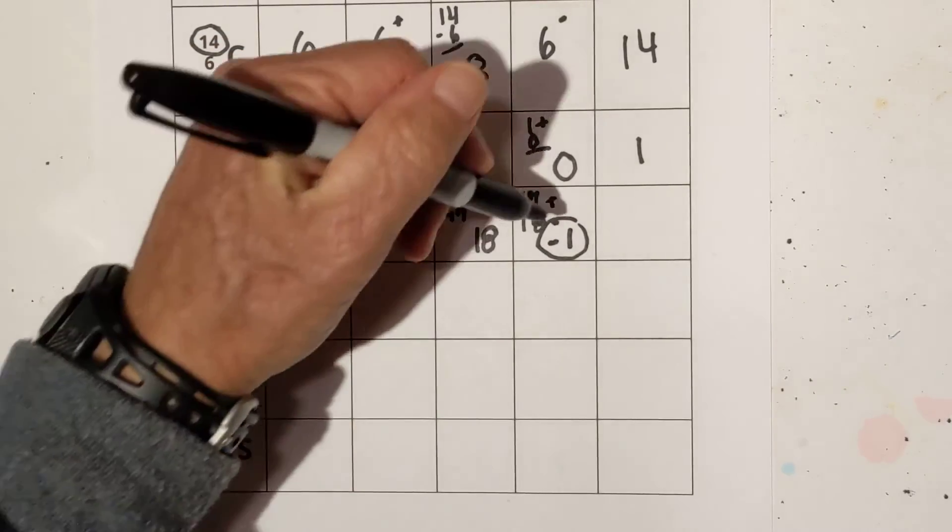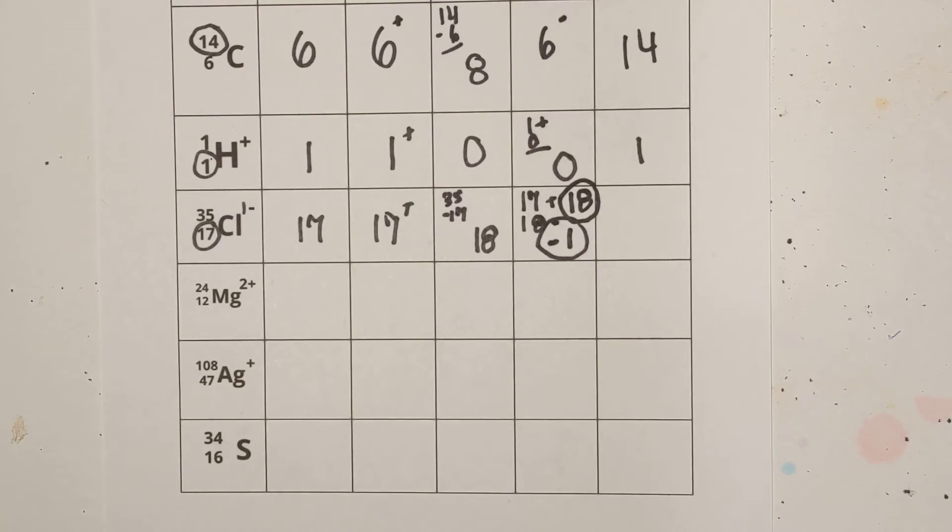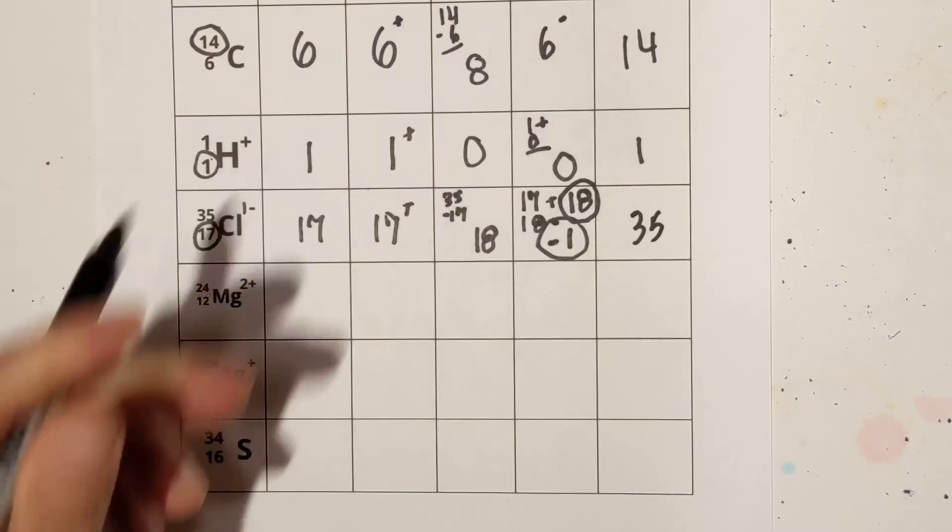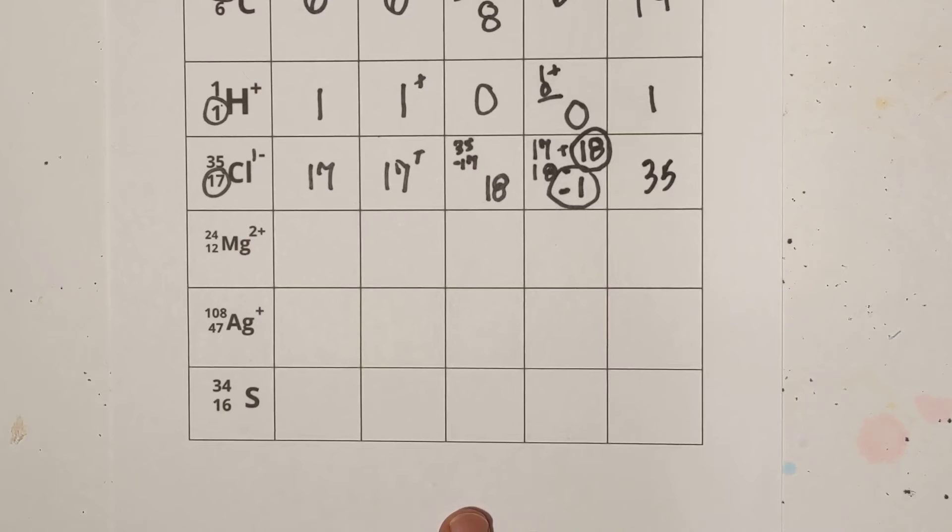So for this, it is 18. If you can see in the midst of all that messiness, that's what it is, and the mass number is 35. Okay, we're making progress. Let's move this on up. Let's do a couple more.